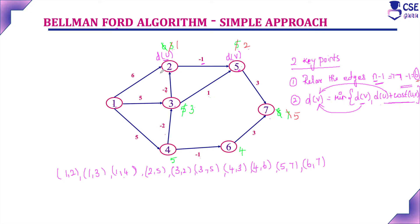Third relaxation: 1 to 2 gives 6, already 1. 1 to 3 gives 5, already 3. 1 to 4 is 5. For 2 to 5: vertex 2 is now 1, so 1 minus 1 equals 0. Update vertex 5 to 0. 3 to 2: 3 minus 2 equals 1. 3 to 5: 3 plus 1 equals 4, but already 0 is minimum. 4 to 3: 3 only. 4 to 6: 4 only. 5 to 7: 0 plus 3 equals 3, minimum is 3, update to 3. 6 to 7: 4 plus 3 equals 7, already 3 is minimum. Third relaxation complete.